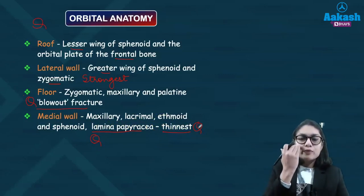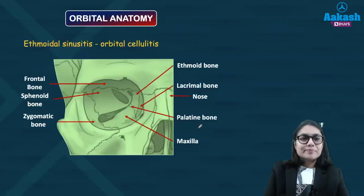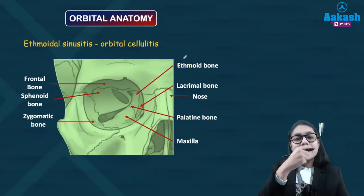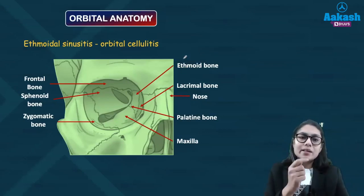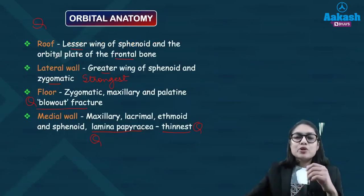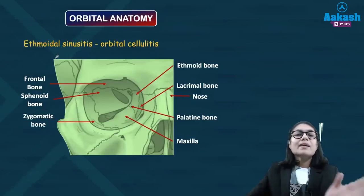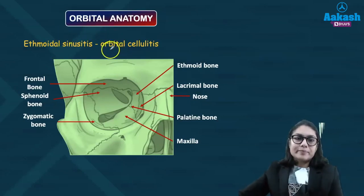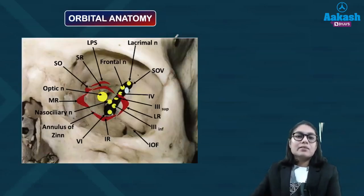The inferior wall or floor is going to be involved in blowout fracture. Your medial wall lies in close association with your ethmoidal sinus, and hence presence of any ethmoidal sinusitis can penetrate through this wall since it is very thin and can present in the eye in the form of orbital cellulitis. So two points to remember with your medial wall: it is the thinnest, known as lamina papyracea, and since it lies close to the ethmoidal sinuses, infection can break through and cause orbital cellulitis.